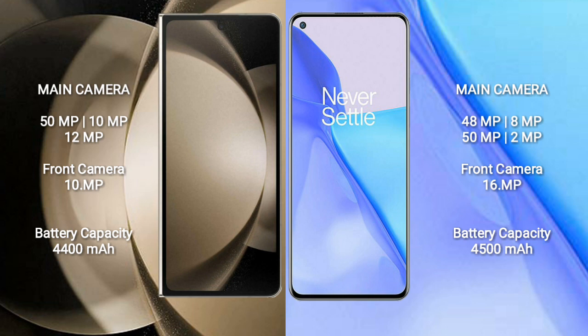OnePlus 9 also has a rear triple camera setup: 48MP plus 50MP plus 2MP, and a front camera of 16MP.